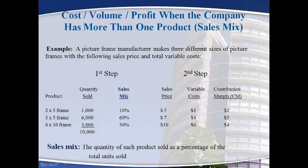Let's now take a look at an example of a company that makes and sells more than one product. A picture frame manufacturer makes and sells three different sizes of frames. Each size sells for a different amount, has different variable costs, and therefore has a different contribution margin. Using only one product will not provide information related to the company as a whole, so a weighted average including all products must be used. The first step is to compute the sales mix — the percentage of total units sold for each product. For example, the 2x3 frame's sales mix is computed by dividing its 1,000 units by the 10,000 total units sold, giving 10%.